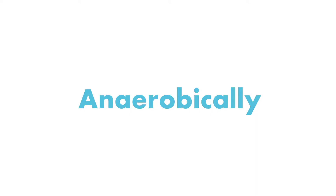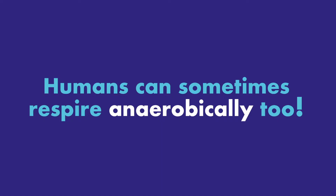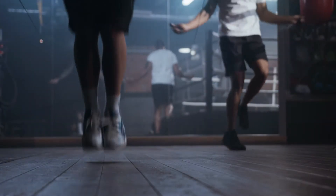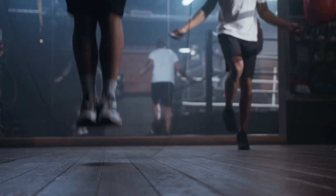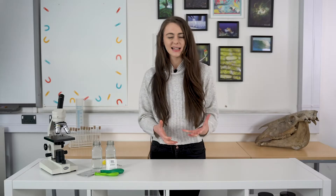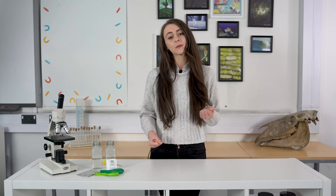Yeast is a fungus. It respires anaerobically, so that means it respires without oxygen. We sometimes can respire anaerobically too — when our muscles are working faster than we can get oxygen to them, they will respire anaerobically instead. Our muscles will still create energy, but instead of leaving behind carbon dioxide and water, they leave behind lactic acid, which can build up and be a bit toxic, and that is why we get muscle cramps.